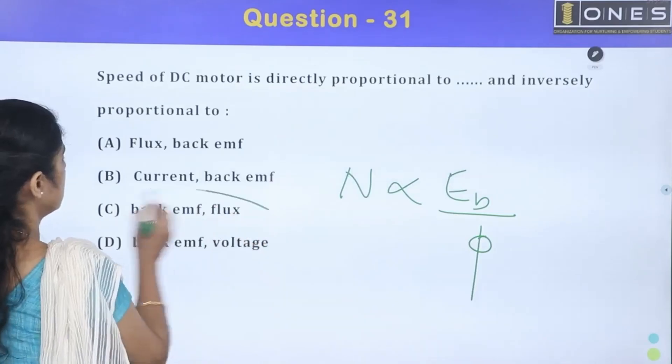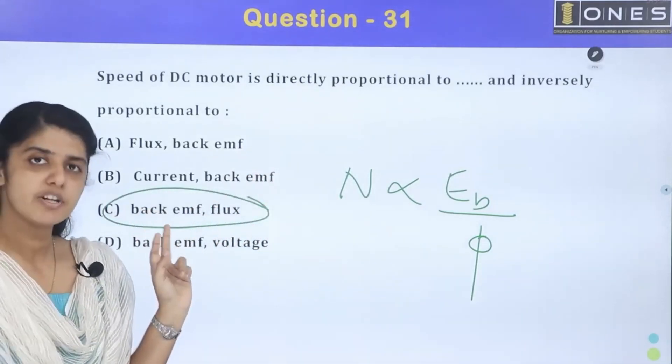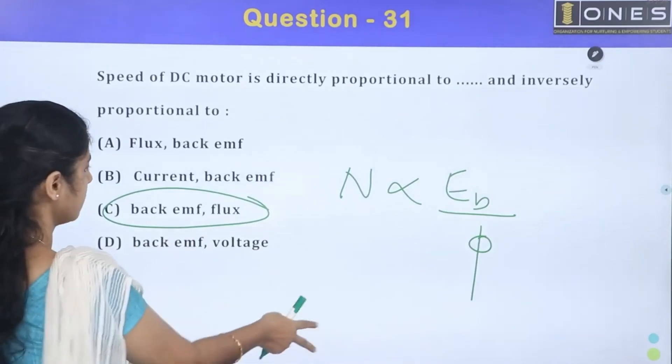For back EMF flux, option C. Back EMF, directly proportional to back EMF, inversely proportional to flux.